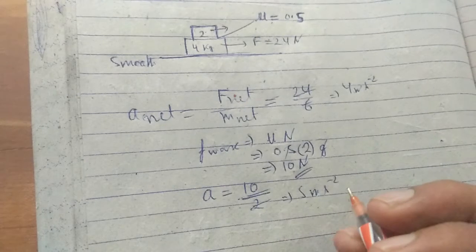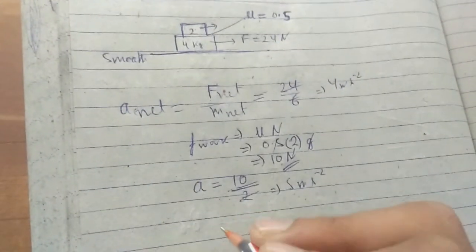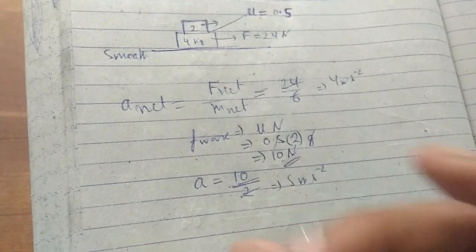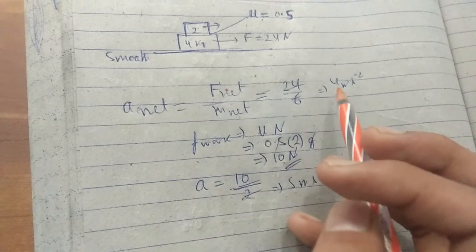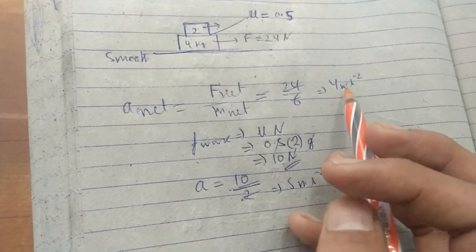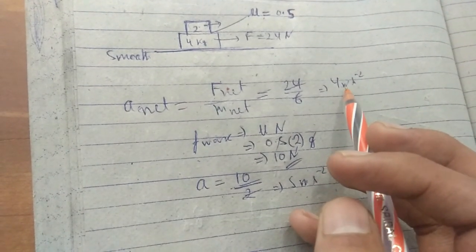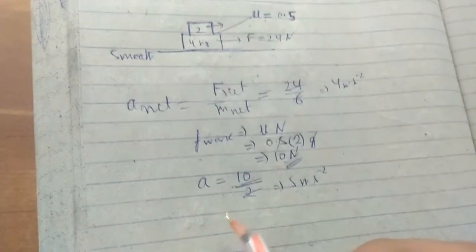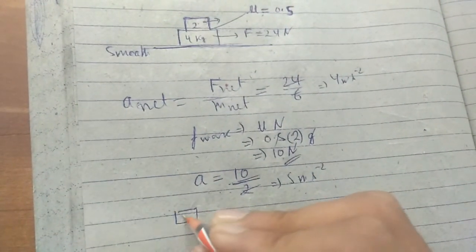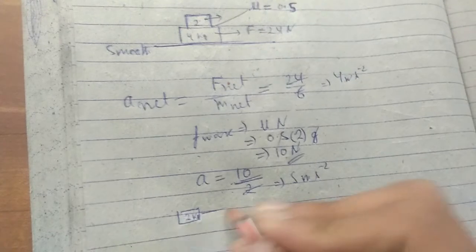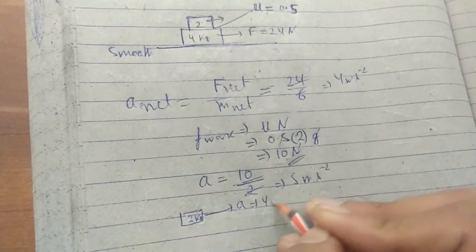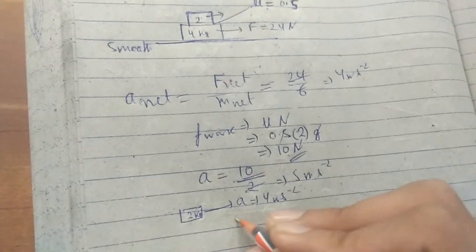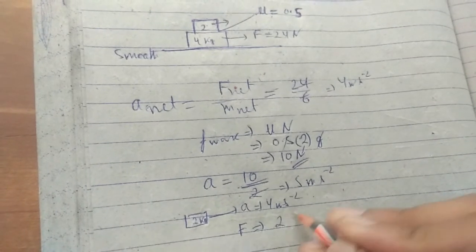So that both blocks move together. So what will be that force? We can apply this 4 m/s² acceleration to the 2 kg block. This 2 kg block accelerating at a rate of 4 m/s². So the net force is equal to mass times acceleration.